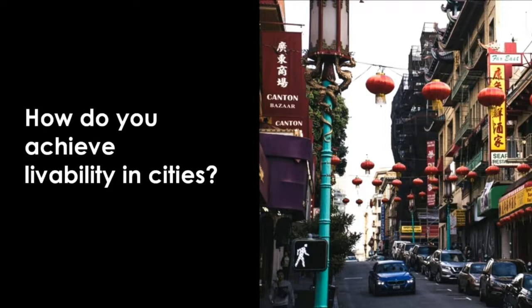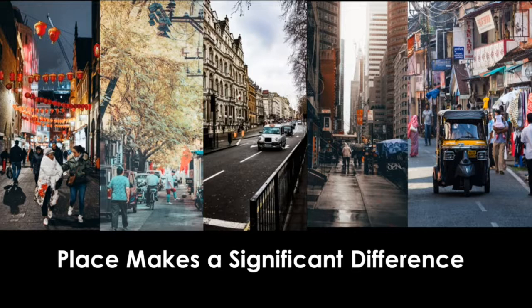How do you achieve livability in cities? Livability and livable places are defined as how local people are willing to work to make their community a better place. A community must define for itself what livability means. Places make a significant difference. You can see different street characters in these images. People's love of place and sense of place leads to a desire to fight for enhancing their places. Place is also unique — every community, large or small, has a distinctive character resulting from its history, natural and man-made physical elements, and a combination of public and private institutions that both create and constrain opportunities for expanding and maintaining quality of life.